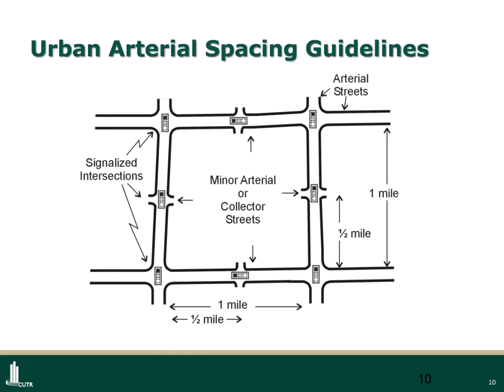Our land survey methods really lend themselves in many areas to this concept of an arterial system which would create something like a 640-acre land mass that could then be broken down into 160-acre segments with a minor arterial system in the middle and across. These 160-acre cells could then be further densified with collectors and local systems with all kinds of different configurations.